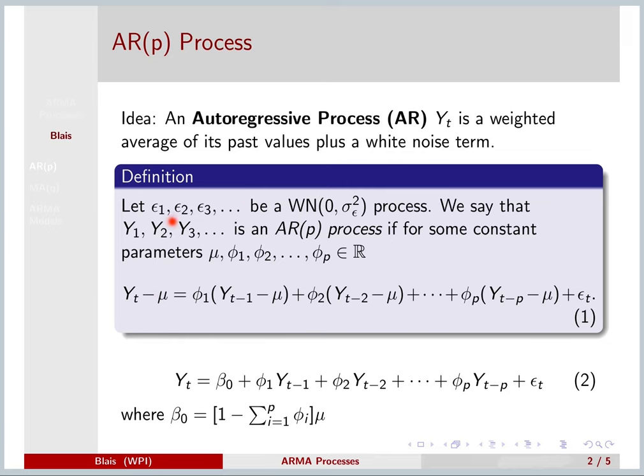So we have a white noise term for every day: day one, day two, day three. And then we have our Y's defined as an AR(p) process if for these constant parameters μ, φ₁, φ₂, up to φ_p, we have this defining equation.